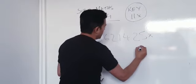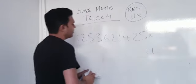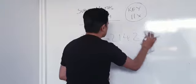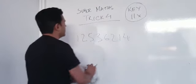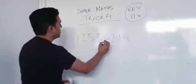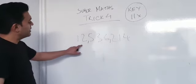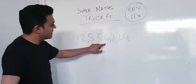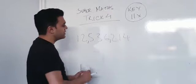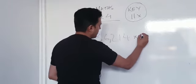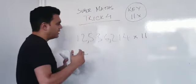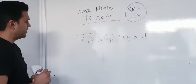What do we do? Let's make it a little bit smaller. Now, look at that number there. So, you've got 12,536,214 times by 11. Remember, you're doing this to impress your friends.